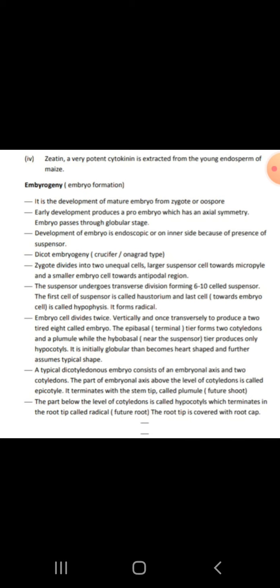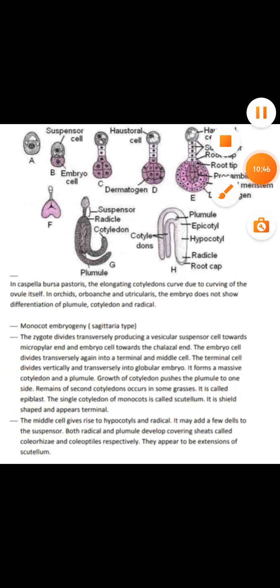A typical dicotyledonous embryo consists of an embryonal axis with two cotyledons. The part of the embryonal axis above the level of cotyledons is called the epicotyl, and it terminates in a stem tip called the plumule — the future shoot. The part below is called the hypocotyl, which terminates in the root tip called the radicle — the future root.